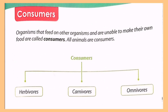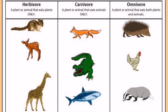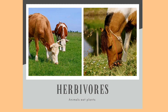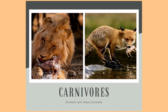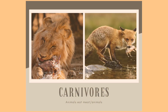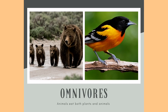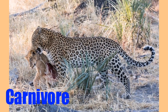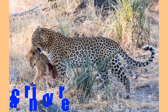Second are consumers — organisms that feed on other organisms and are unable to make their own food. Consumers are grouped into three: herbivores, carnivores, and omnivores. Consumers that feed only on plants are called herbivores. Consumers that feed only on meat or animals are called carnivores. Consumers that feed on both plants and animals are called omnivores.